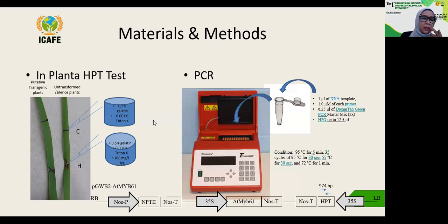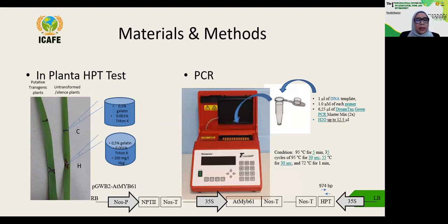For the in planta leaf assay, we screen transgenic plants by dropping 5 to 10 microliters of solution containing 100 milligrams per liter of hygromycin on the leaf surface. The same solution without hygromycin was used as a control. Leaves of untransformed Rojolele or Nipponbare were used as control checks. Transgenic plants will show no necrotic reaction, and vice versa.